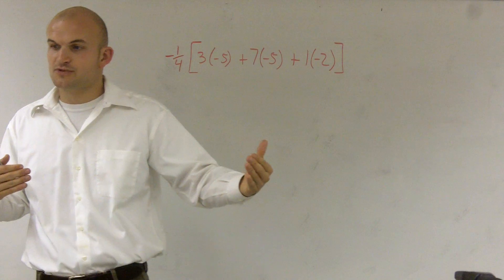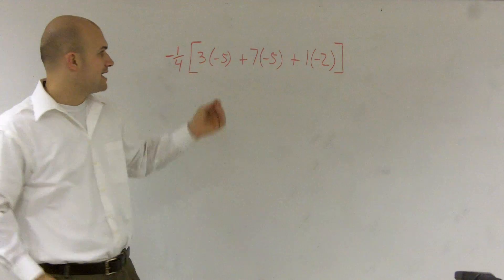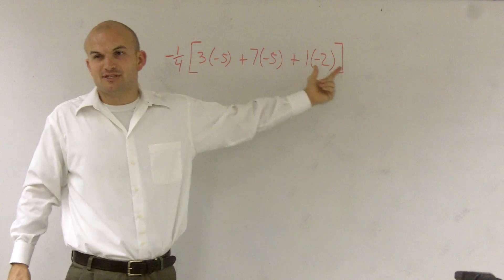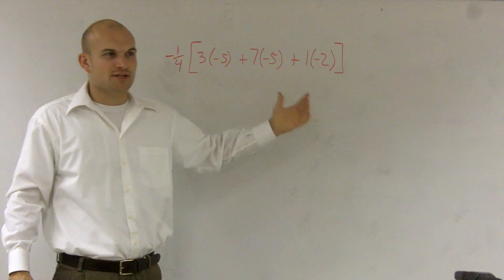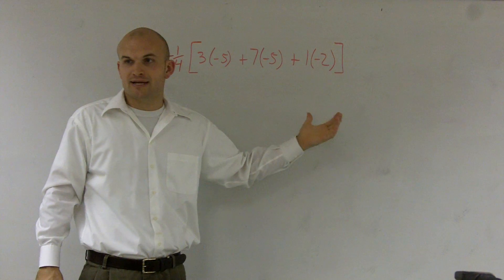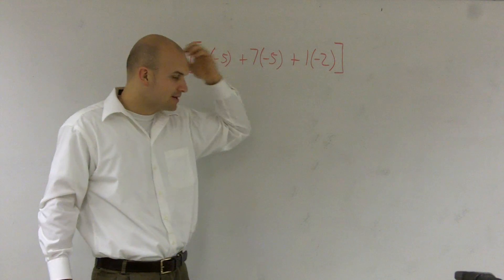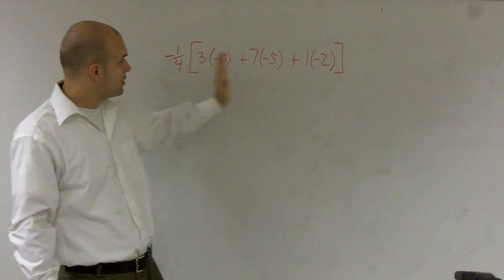we always do the operations inside the parentheses first. Once we look inside the parentheses, we look for any other parentheses. I do see some parentheses, but they're just around one number, so there's no operation to perform. Then I look for exponents. There's no exponents.